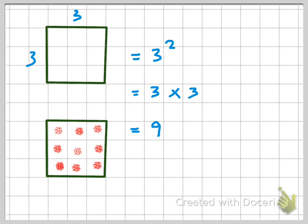Here's another one exactly the same. This time we've got three squares across the top and three squares down the side. So we call this three squared. Three squared equals three times three, and three times three equals nine. And if you look at all the little boxes inside the green square there's one, two, three, four, five, six, seven, eight, nine.